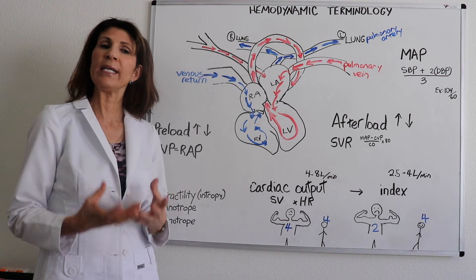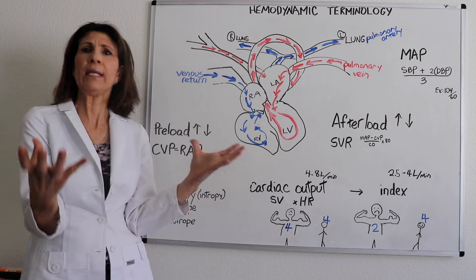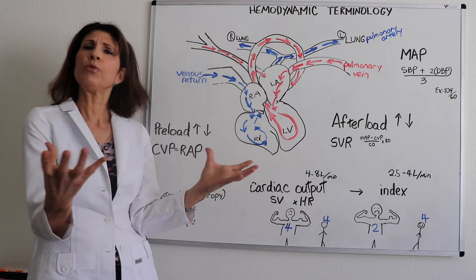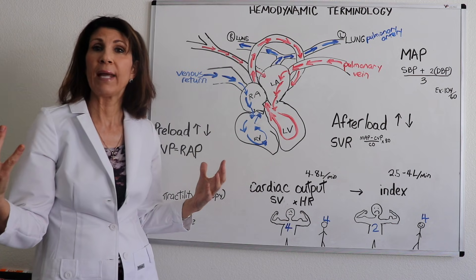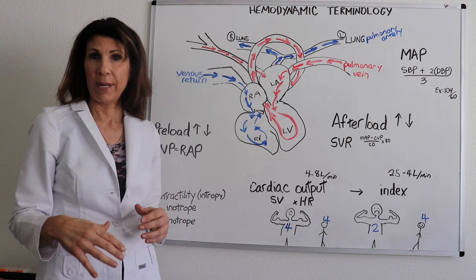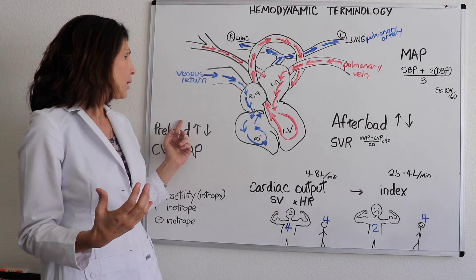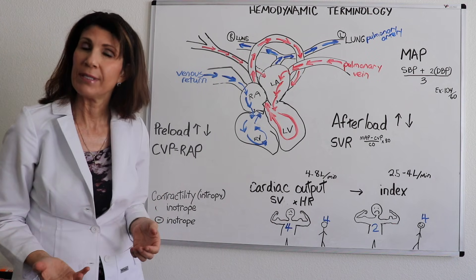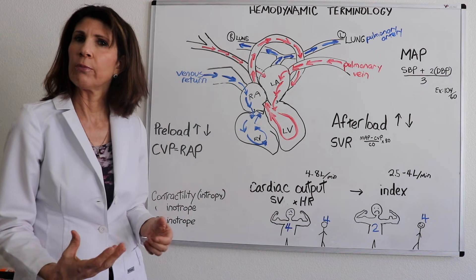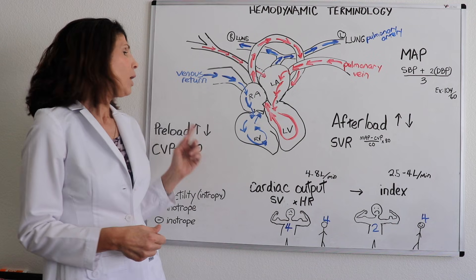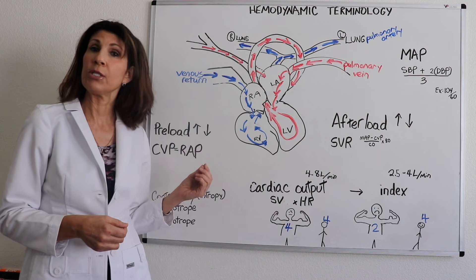What is preload? By definition, preload is the amount of blood in the ventricles at end diastole — the volume that's in there at end diastole. Patients with elevated preload that we need to manipulate include congestive heart failure patients who are fluid volume overloaded, so we need to understand what a preload reducer is — something that would lower that volume.